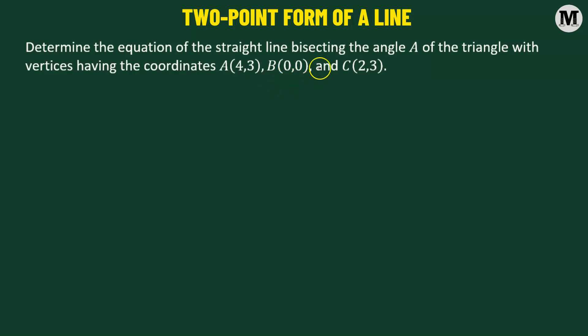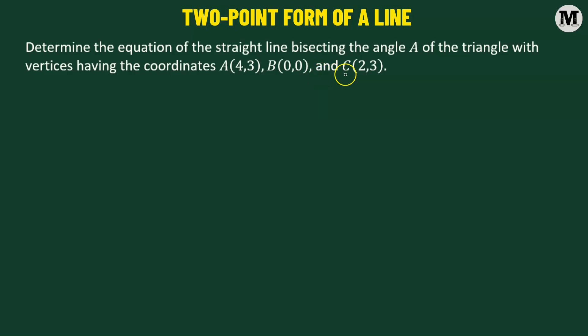Determine the equation of the straight line bisecting the angle A of the triangle with vertices having the coordinates 4, 3 and 0, 0 and 2, 3.